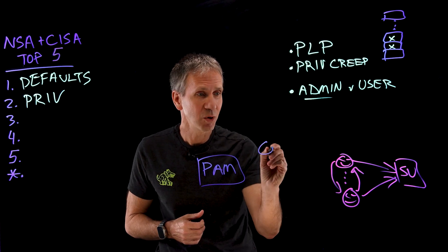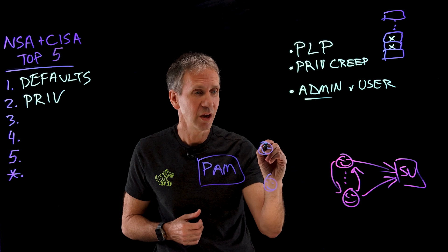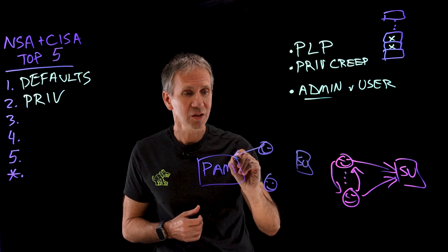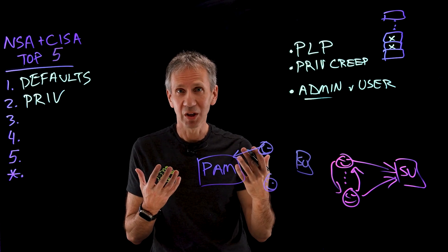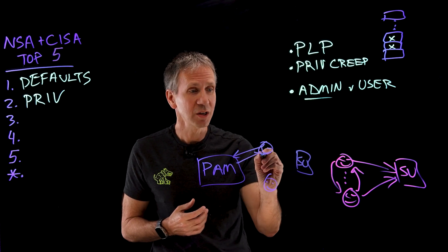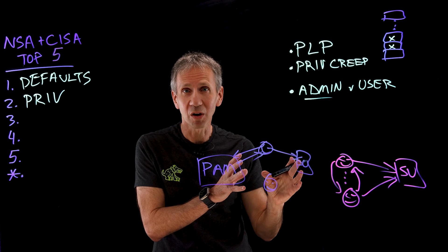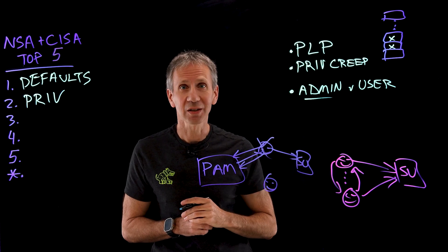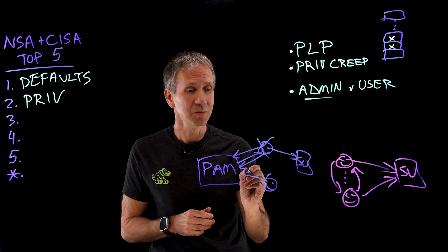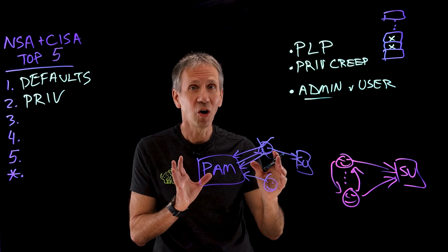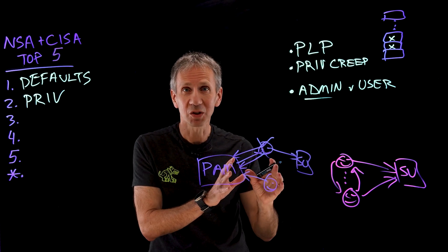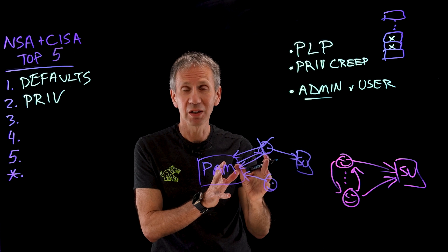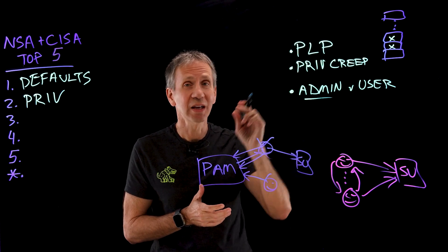If we install a PAM system, these users instead of logging directly in as the super user log into the PAM system, authenticate and prove they are allowed to be on the system, get the credentials, log in, do their work. When they're done, they check the credentials back into the system and no longer have access. If another admin needs access, they check the credentials out. The nice thing is, you always know who is responsible at any point in time — you have admin capabilities only for as long as you need them. That's the principle of least privilege.